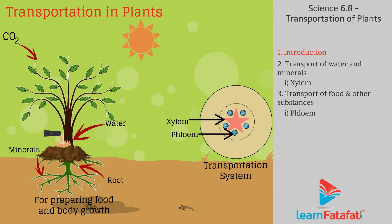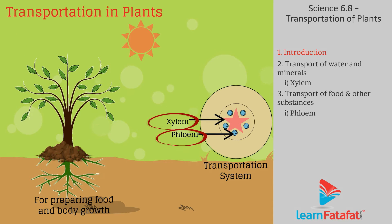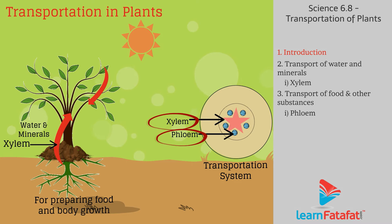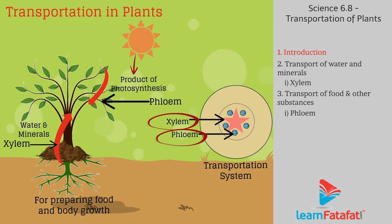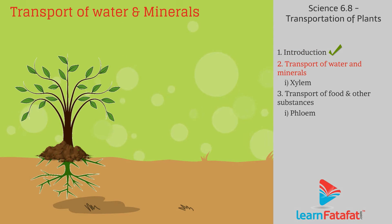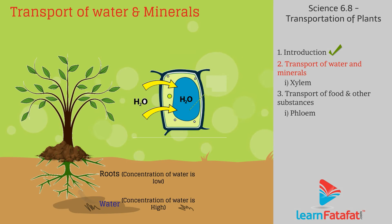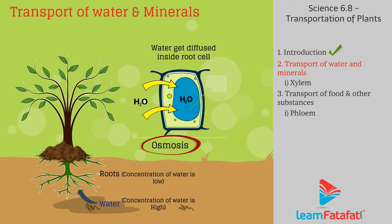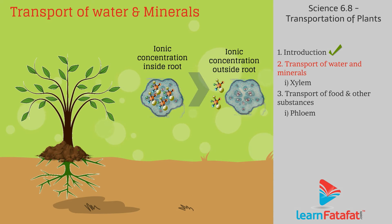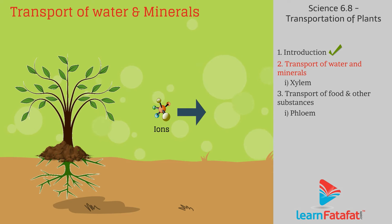For that, plants have specially organized conducting tubes called xylem and phloem. Xylem moves water and minerals from roots to body parts, and phloem transports the products of photosynthesis from leaves to other parts of the plant. The concentration of water outside the roots is higher than inside, hence water is diffused into the roots — this process is called osmosis.